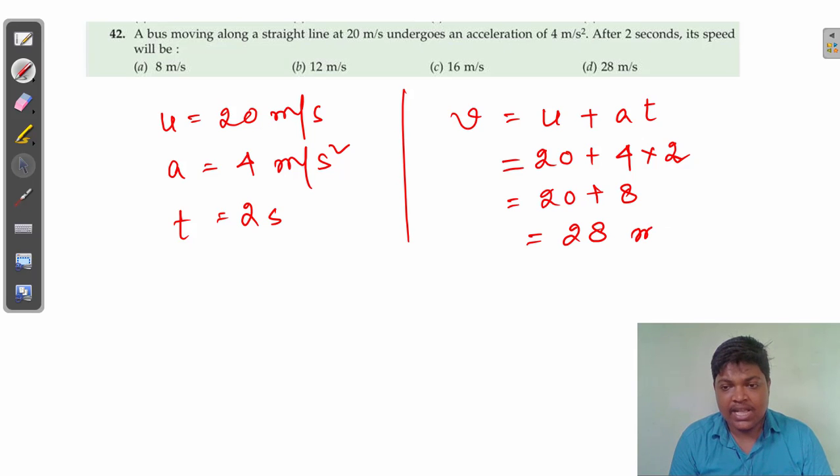In this case, that is 20 plus 4 times 2 is 8, so after calculation we are getting the answer as 28 meters per second. So option D is the correct answer. Thank you.